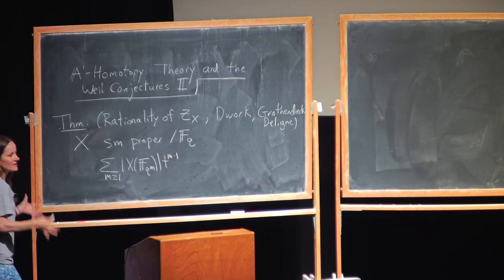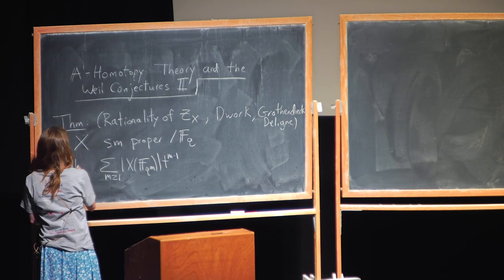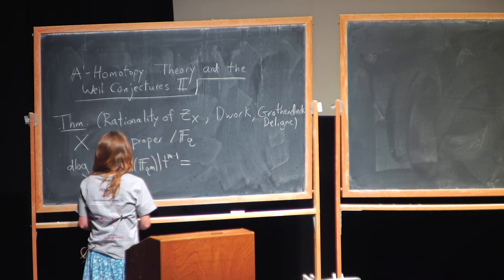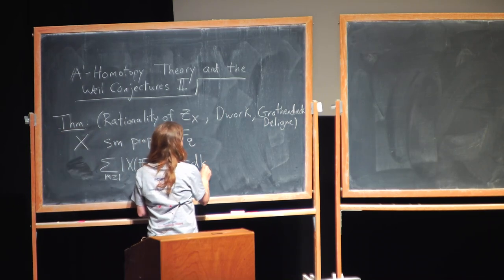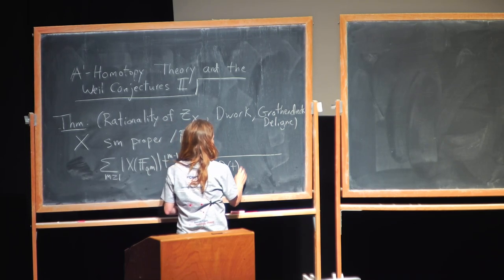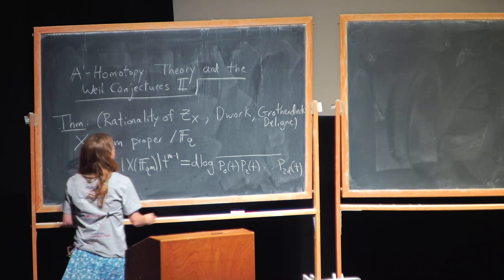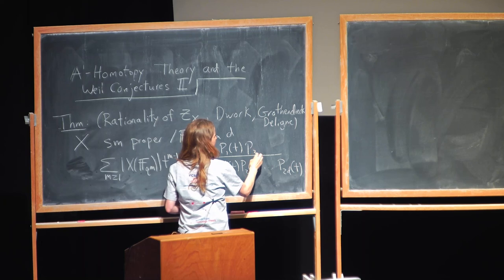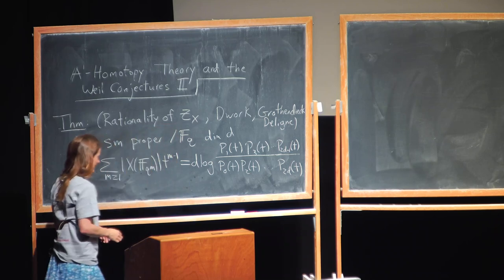It was related to the geometry and the topology of the complex points. We're going to show that this is d log — meaning d by dt log — of a rational function, p0 of t over p2 of t, all the way up to p twice the dimension, over p1 of t, p3 of t, p_{2d-1} of t.